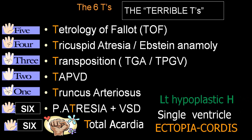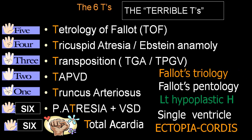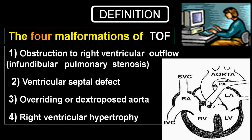Other conditions include single ventricle and double outlet right ventricle, left or right hypoplastic heart. There are also Fallot's pentology and Fallot's triology. Today we discuss only TOF — Fallot's Tetralogy — which has four malformations: obstruction to right ventricular outflow, that is infundibular pulmonary stenosis; ventricular septal defect (VSD); dextroposition or overriding of the aorta; and right ventricular hypertrophy.